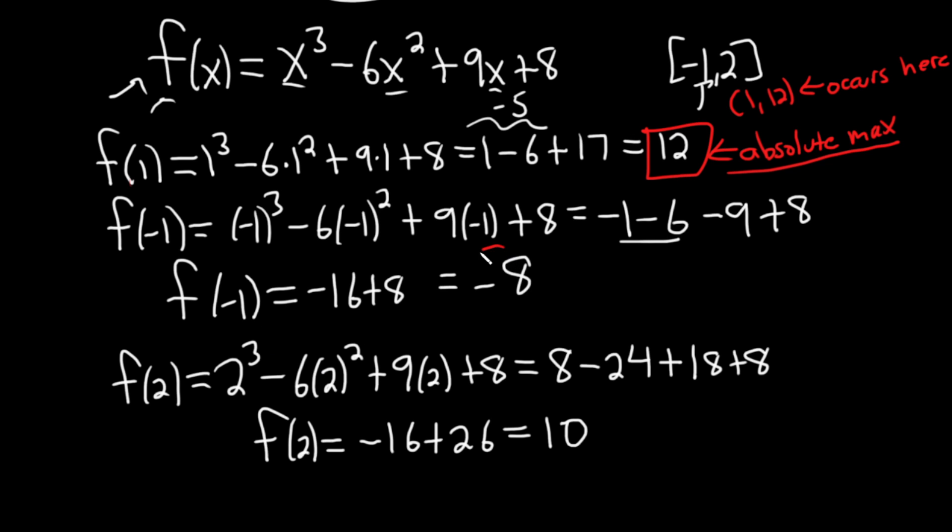And the smallest one is -8, so this is the absolute min. If you were doing this for a class, they might want to know where it occurs. It occurs at x = -1, at the ordered pair (-1, -8).